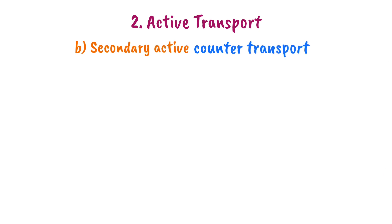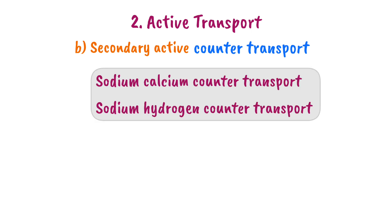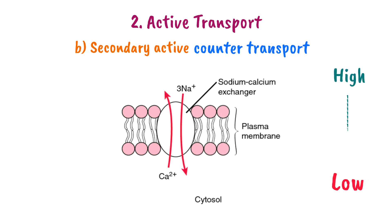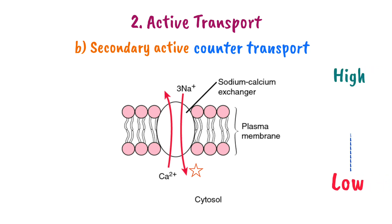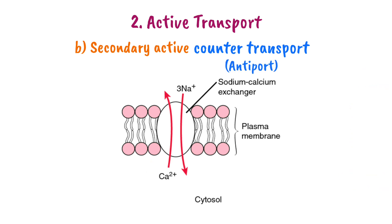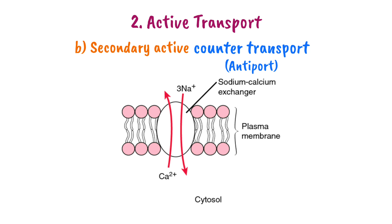The second type of secondary active transport is counter transport, also known as antiport. Examples include sodium-calcium counter transport and sodium-hydrogen counter transport. In this mechanism, sodium ions moving downhill release energy, which is used to move calcium ions in the opposite direction against their concentration gradient. Because the two substances move in opposite directions, this is called counter transport or antiport.